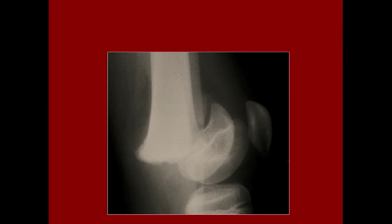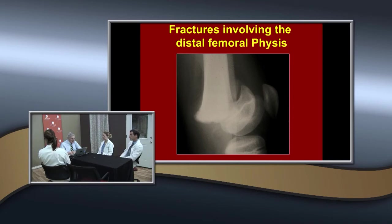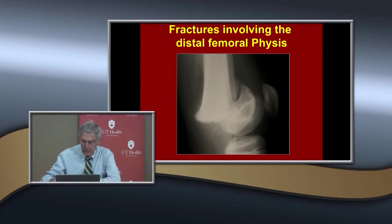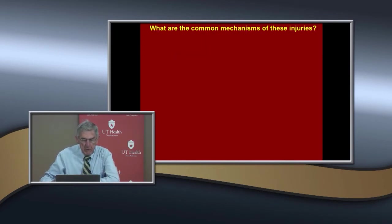Now, what kind of fracture is this? It looks like a Salter-Harris I — the fracture line goes through the physis. This introduces the distal femoral physis. We've talked about metaphyseal fractures, but most of these injuries occur through the physis.